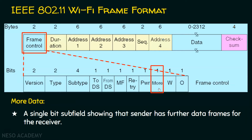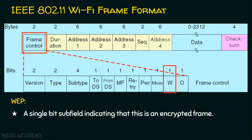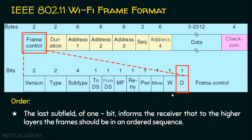The more field indicates that the sender has further data frames for the receiver. The W field stands for WEP and is mainly for security purposes — when frames are encrypted, this field is set to 1. The last subfield is the O (order) field, a 1-bit subfield that informs the receiver that frames should be delivered to the higher layers in the correct sequence order.